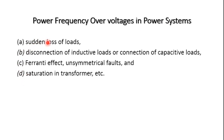The first condition is sudden loss of loads. Second is disconnection of inductive loads or connection of capacitive loads. Third is the Ferranti effect, where the receiving end voltage is greater than the sending end voltage because the transmission line behaves like a capacitance. Fourth is unsymmetrical faults — line to ground, line to line, double line to ground — and saturation in the transformers.